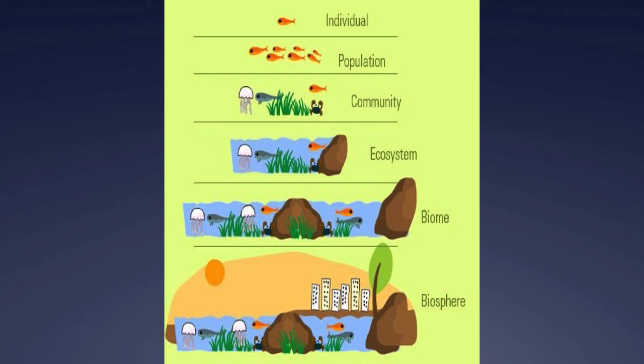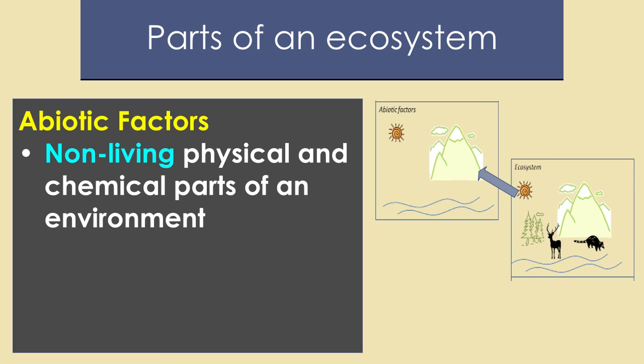The next thing we're going to define are abiotic and biotic factors. Abiotic factors are non-living — remember, 'a' means not, 'bio' means living — so they are the non-living, physical, and chemical parts of an environment. The non-living parts shown in a picture include sunlight, soil type, amount of water, and temperature.